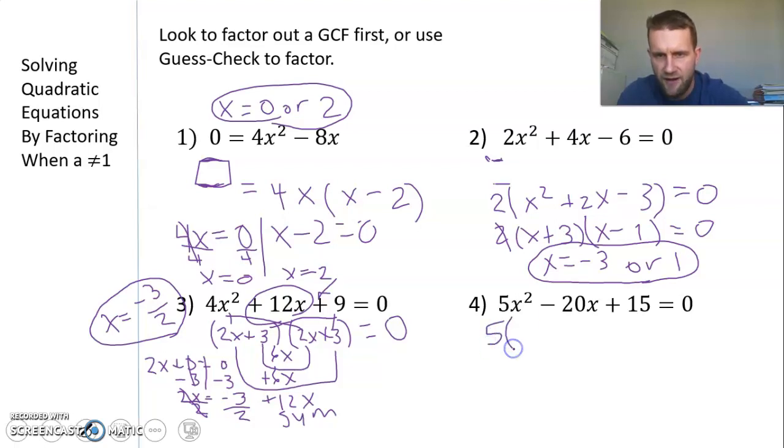I would factor out a GCF of 5 from each term. So 5(x² - 4x + 3) = 0. Now I need two numbers that multiply to positive 3 and add to -4. I know it's (x -)(x -) because two negatives multiply to positive and add to a larger negative. 3 is prime, so the only factors are 3 and 1. So (x - 3)(x - 1) = 0.